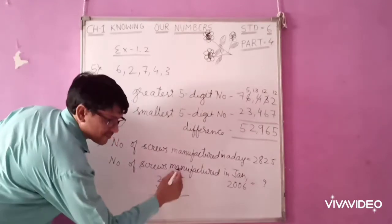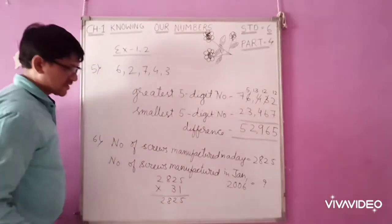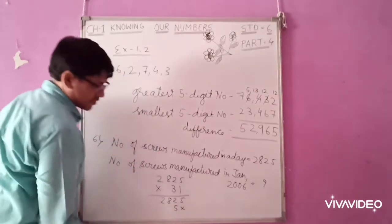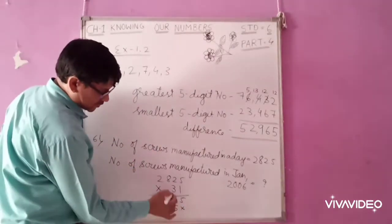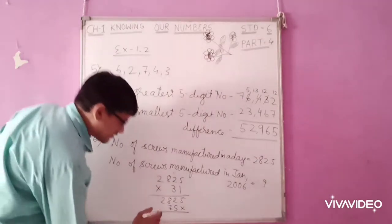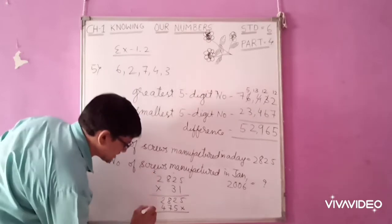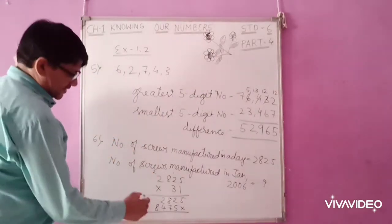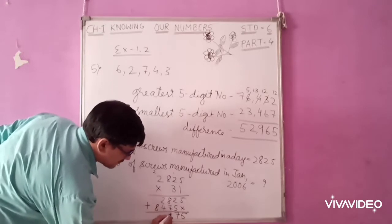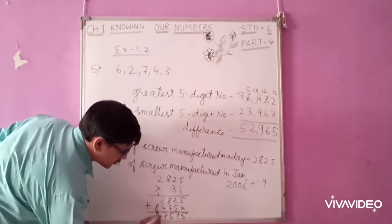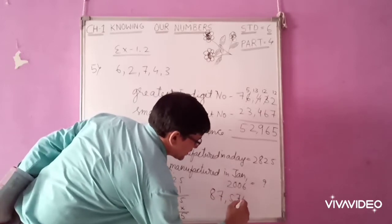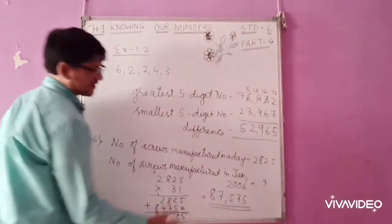When you multiply by 1, the answer is 2,825. Same. When you multiply by 3, 3×5 is 15. 3×2 is 6, 7. 3×8 is 24. 4, 2 carry. 3×2 is 6, 7, 8, 2, 5. Add these numbers now. 5, 0 is 5. 2, 5 is 7. 8, 7 is 15, 1 carry. 6 and 7. So total number of screws manufactured is 87,575. So that is the answer.